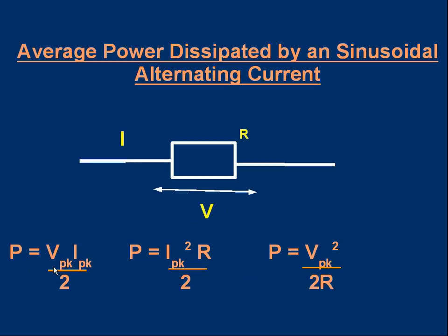...is half the peak power. So for example if I know the peak voltage and the peak current, I can multiply them and take half to get the average. The peak power is V_peak² / R, and if I divide by two I get the average power: the average power is half the peak power.